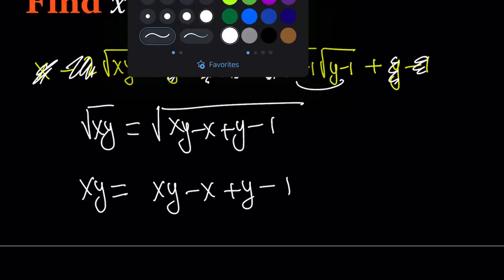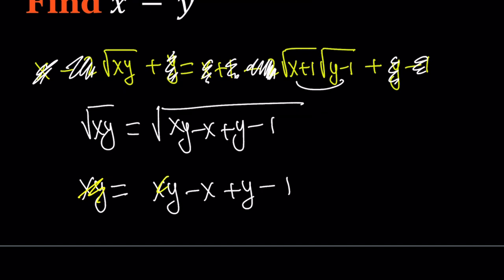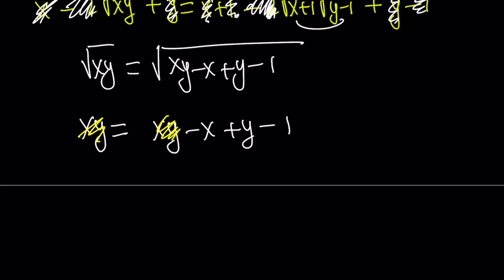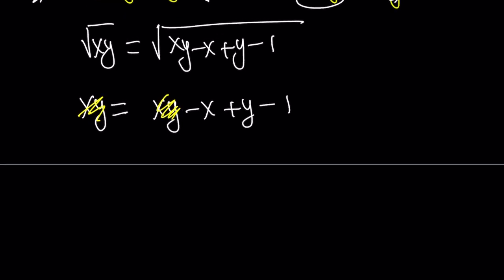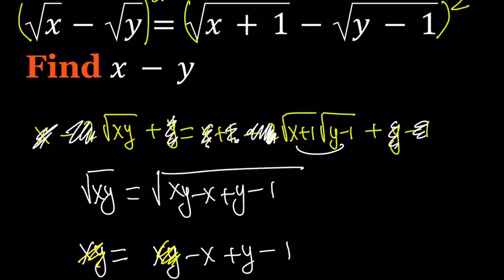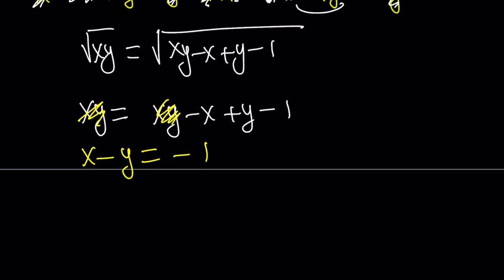More cancellations, right? xy cancels out, leaving us with something super simple. And guess what? We can put the -x + y on the left-hand side and write it as x - y, and -1 stays on the right. And what were we looking for? We were looking for x - y. Wow. Are you serious? Is it that easy? Well, maybe, maybe not. But we got x - y = -1 from here.